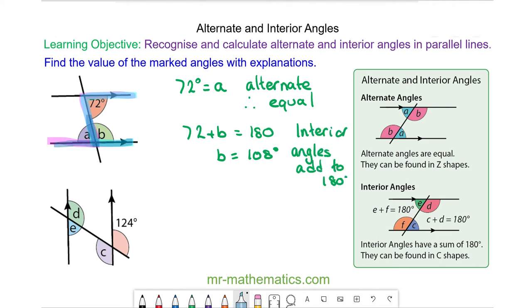We can check this works because angle A and angle B lie along a straight line. So A add B should be equal to 180. And 72 plus 108 does make a straight line.